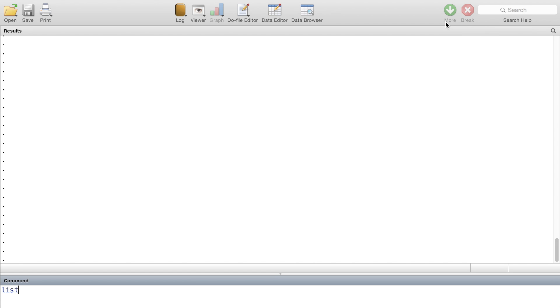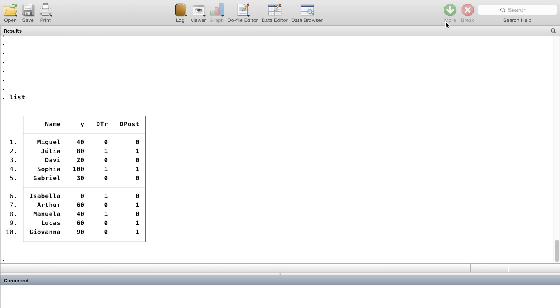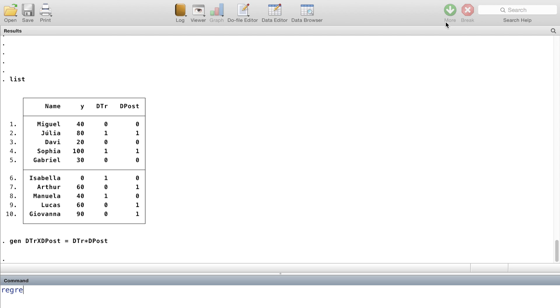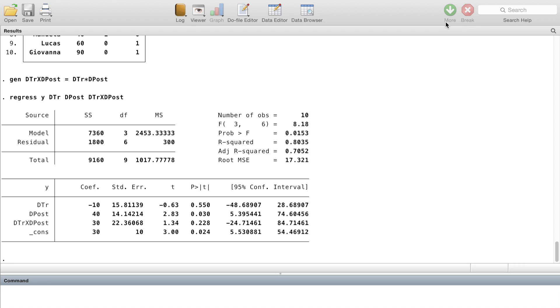So here's the data we were just looking at. We've got our 10 observations. We've got our same three variables. All we have to do is first create the interaction. So I'll interact the treatment dummy and the post period dummy by creating a new variable which is just the two multiplied together. And now I just run the regression. Regress Y on the dummy variable for the treatment, dummy variable for the post period, and the interaction. And what we can see is that the coefficient on the interaction is 30, exactly what we got when we did the diff-in-diff by hand.